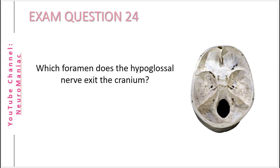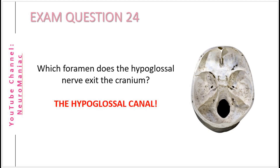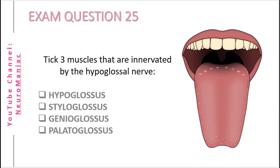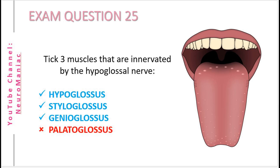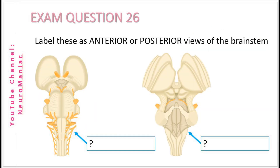Question 24: Which foramen does the hypoglossal nerve exit the cranium? It's an easy question to start off — the answer is the hypoglossal canal. Question 25: Which three extrinsic muscles of the tongue does the hypoglossal nerve innervate? All the muscles mentioned are in fact extrinsic muscles of the tongue, but the palatoglossus is the only muscle which is not innervated by the hypoglossal nerve. Question 26: Label these as anterior or posterior views of the brainstem.